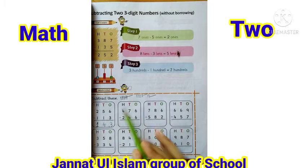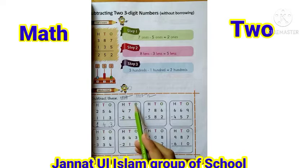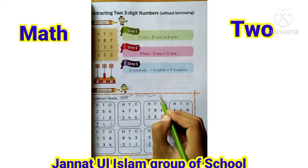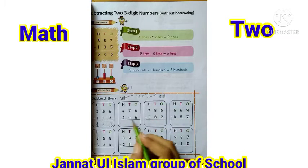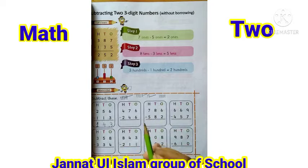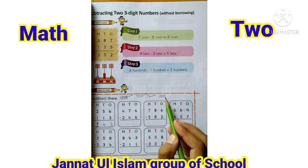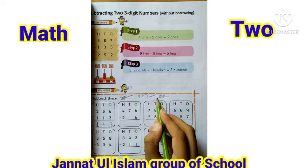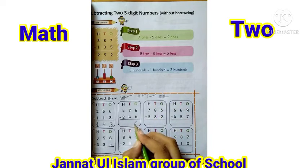Question number two میں بھی اسی طرح ہوگا — ones، tens اور hundreds۔ اوپر three-one-tens اور hundreds لکھا ہوا ہے۔ Ones والوں میں سے ones کو minus کریں: six lines draw کریں — one, two, three, four, five, six۔ جب six میں سے six minus کریں گے تو کوئی line نہیں بچے گی، تو ادھر zero لکھیں گے۔